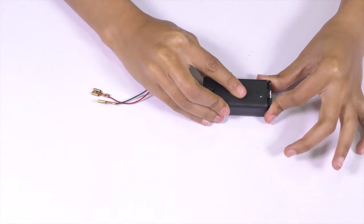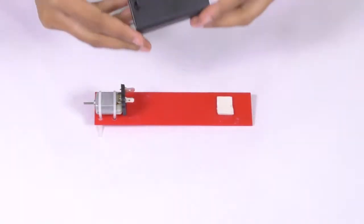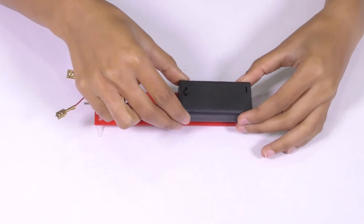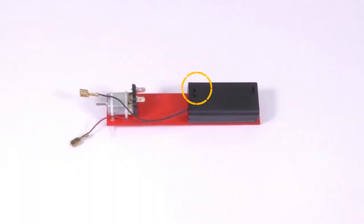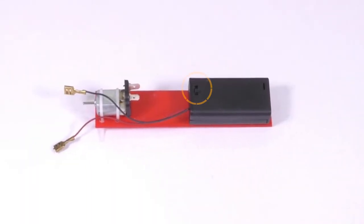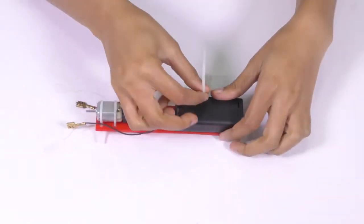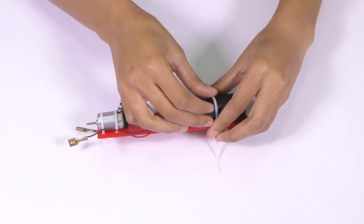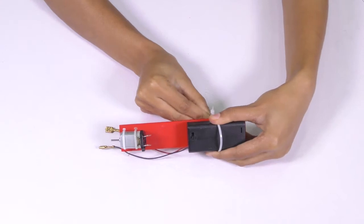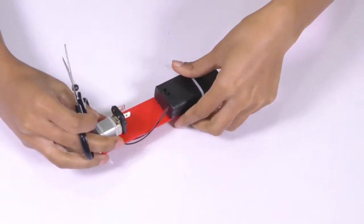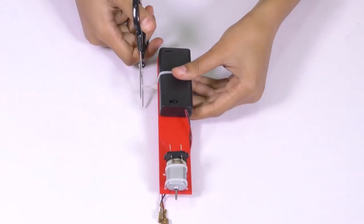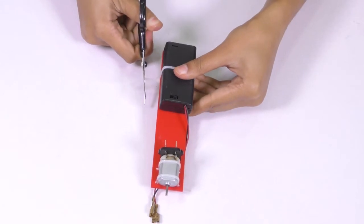Now, take and fix the battery holder on the tape. Make sure the switch faces up. Next, we can use a cable tie to secure the battery holder to the base strip more tightly and cut off the loose end of the cable tie using scissors.